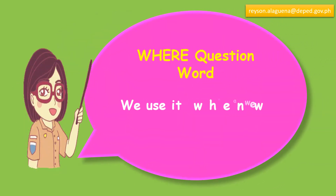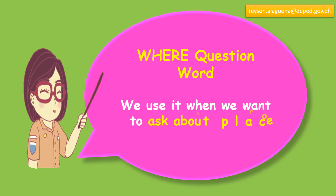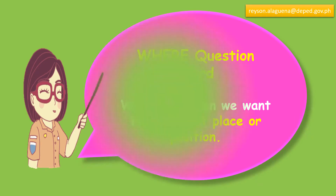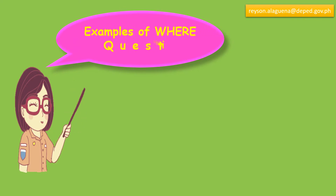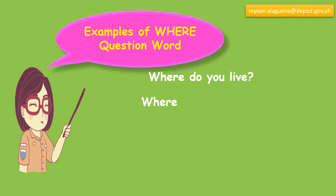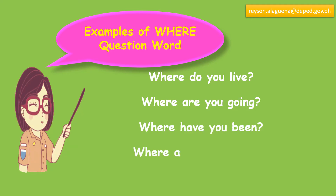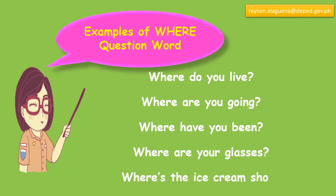The question word 'where' — we use it when we want to ask about place or position. Examples: Where do you live? Where are you going? Where have you been? Where are your glasses? Where's the ice cream shop?